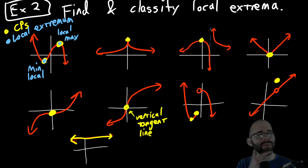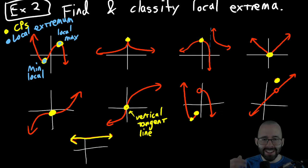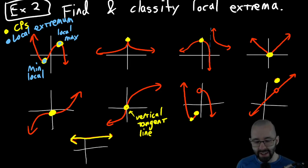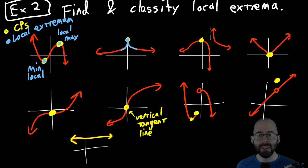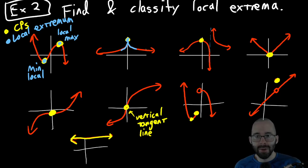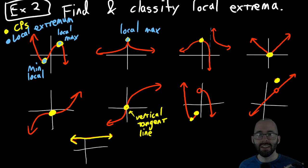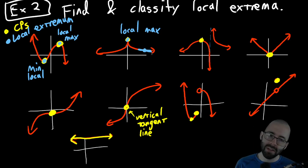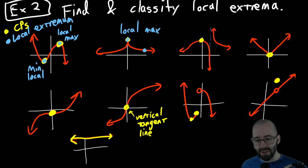Our local extrema just happened to be at the critical points — what a coincidence! Next one: if we look a little to the left and a little to the right, we're only looking at this blue component. Our critical point is the biggest one around — in fact, it's the biggest on the whole graph. That's going to be a local max. Any other point you choose, you look at a small region around it, there will be points above and below it.